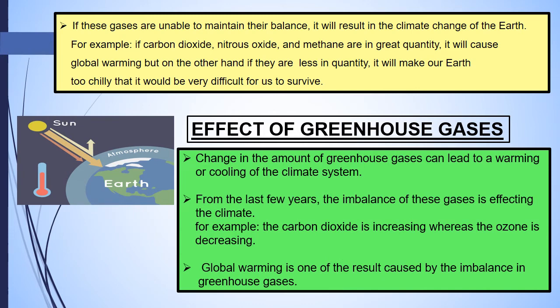Students, we will now see how greenhouse gases are affecting us. A change in the amount of greenhouse gases can lead to a warming or cooling of the climate system. From the last few years, the imbalance of these gases is affecting our climate on a great scale. For example, carbon dioxide is increasing whereas ozone is decreasing. Global warming is one of the results caused by the imbalance in greenhouse gases.